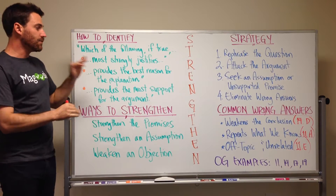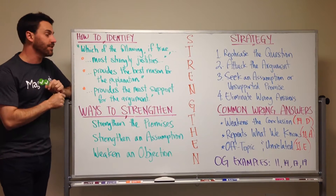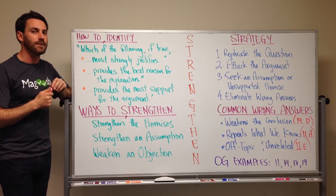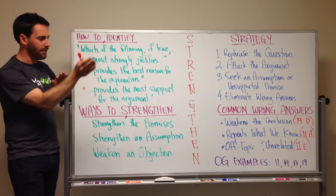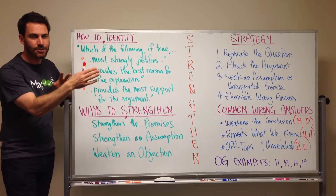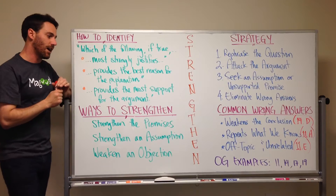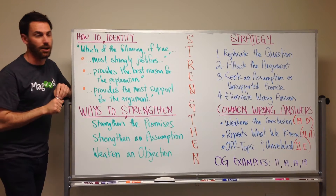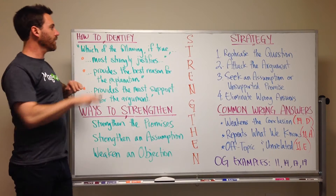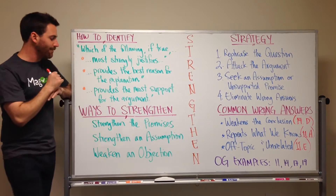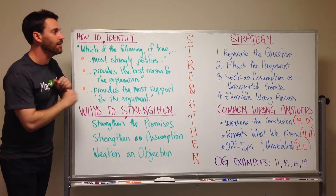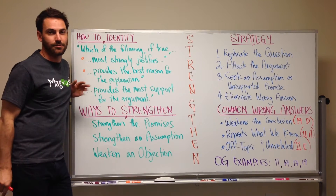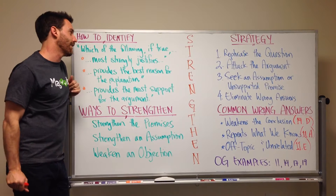This is one of the more common question types you're going to see in the critical reasoning section. Its sister question is the weakening one, which we'll do in another video, but it's going to be very similar. So we're going to look at how to identify strengthening questions, the strategy, and common wrong answers. Let's dive in.